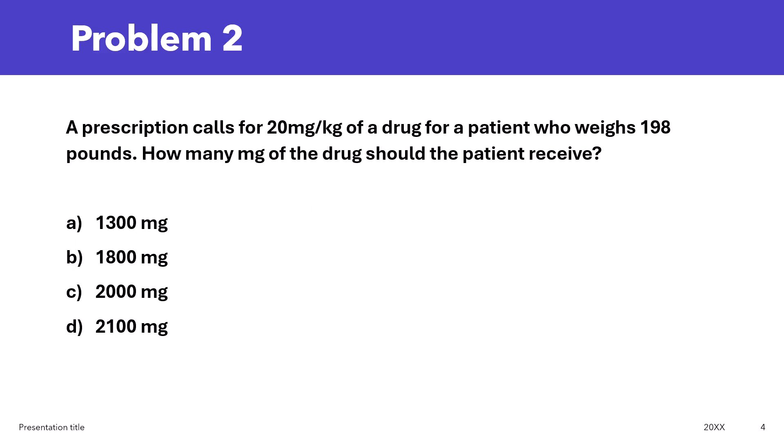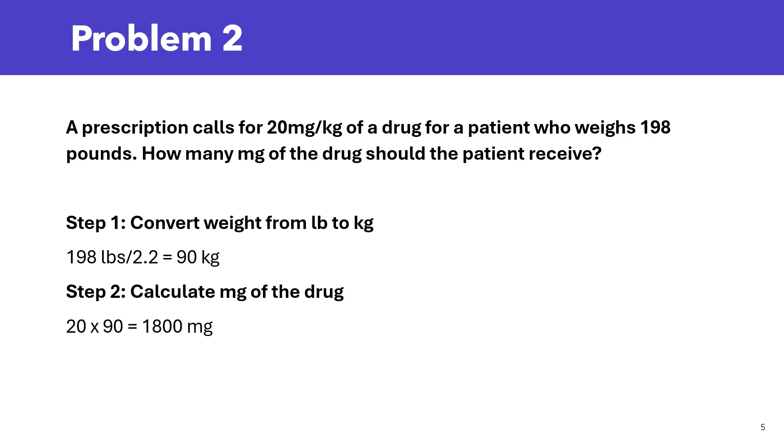Let's look at another problem. A prescription calls for 20 mg per kg of a drug for a patient who weighs 198 pounds. How many mg of the drug should the patient receive? Now, take a moment, try to solve this, and then write your answer in the comments below, and then we'll solve it together. Okay, let's see if you got it right.